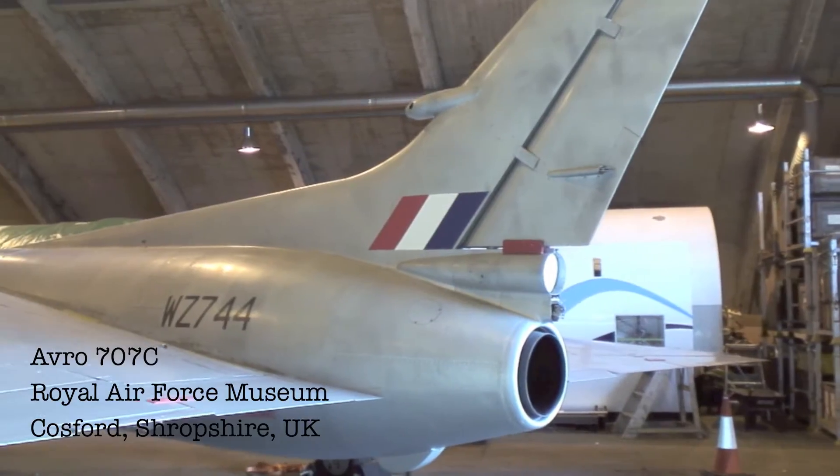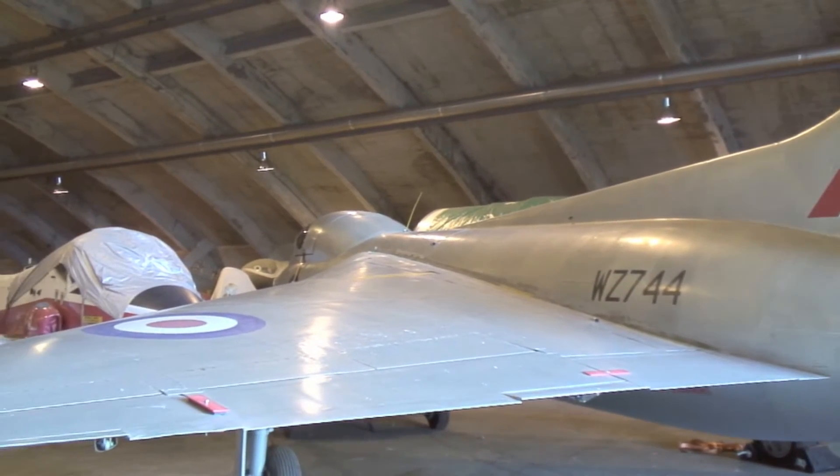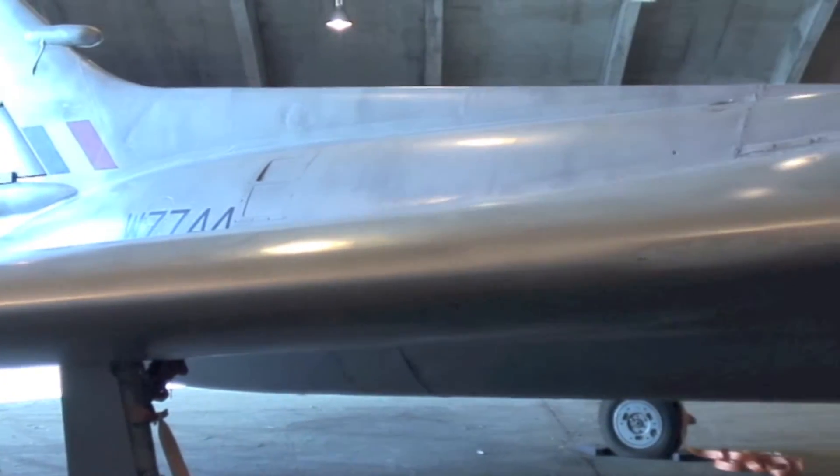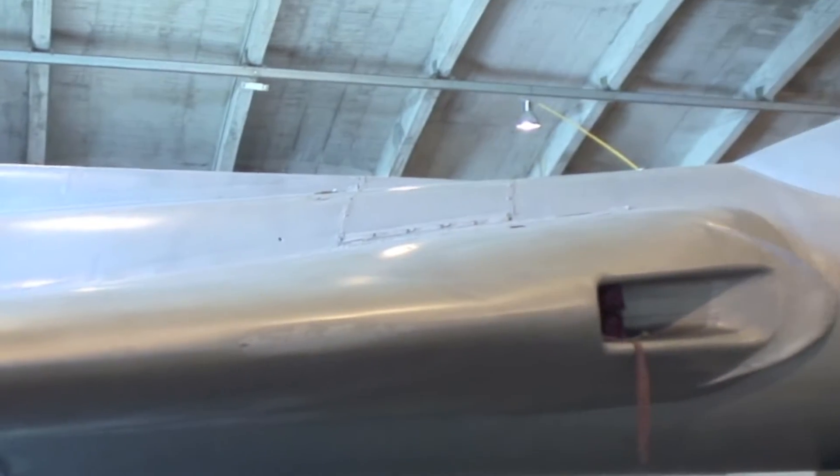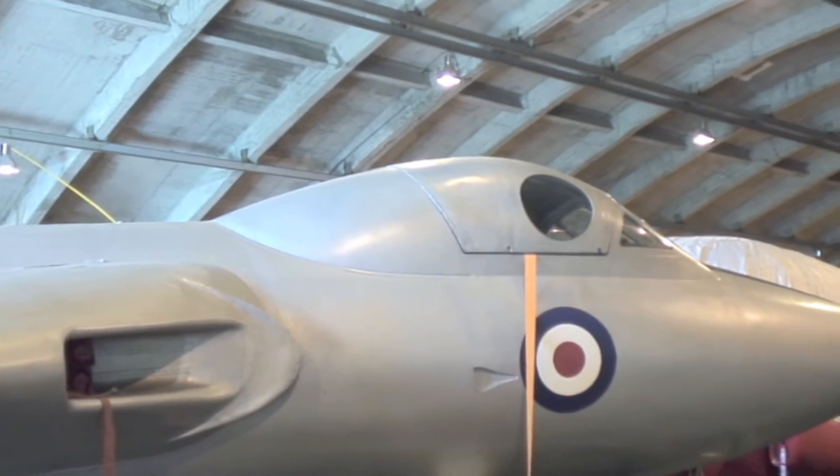Only one Avro 707C was built, designed as a two-seat, side-by-side training aircraft for delta wing pilots. It was also one of the first fly-by-wire aircraft. So why has this unique and important aircraft been taken off display at the museum?